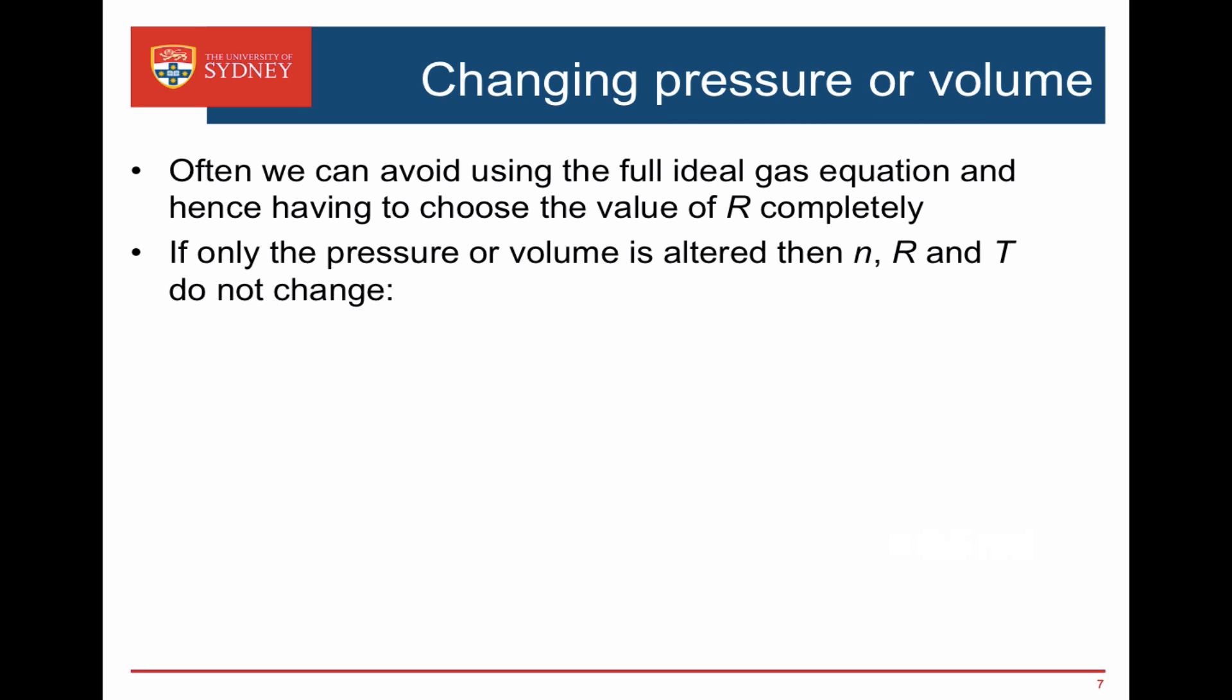Okay so we can choose which value of R to use but actually often we can get away without using the full ideal gas equation making our calculations much more simple and not even having to choose the value of R. Often we only change one thing. We keep other things constant. So let's change only the pressure or the volume and assume that the number of moles and the temperature do not change.